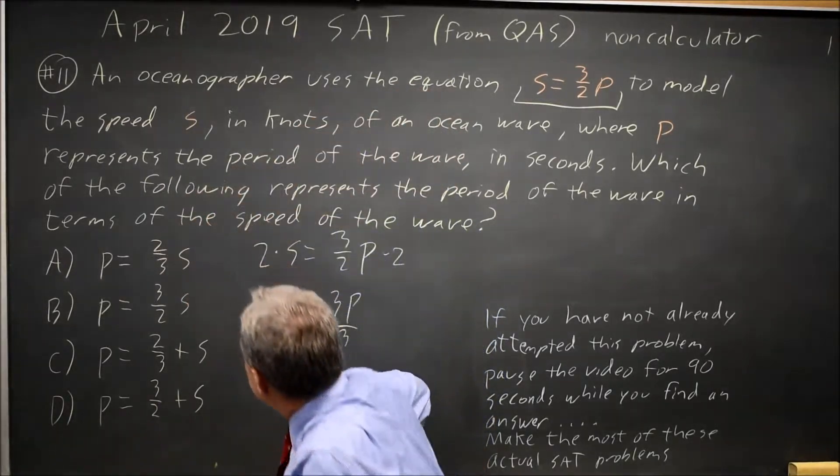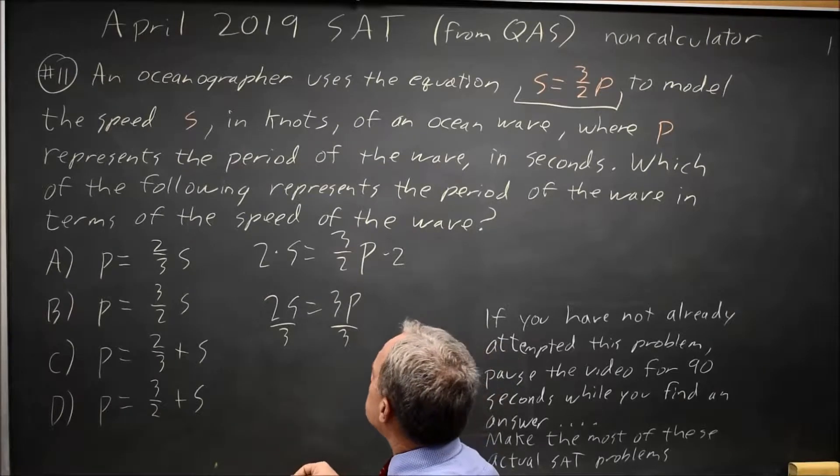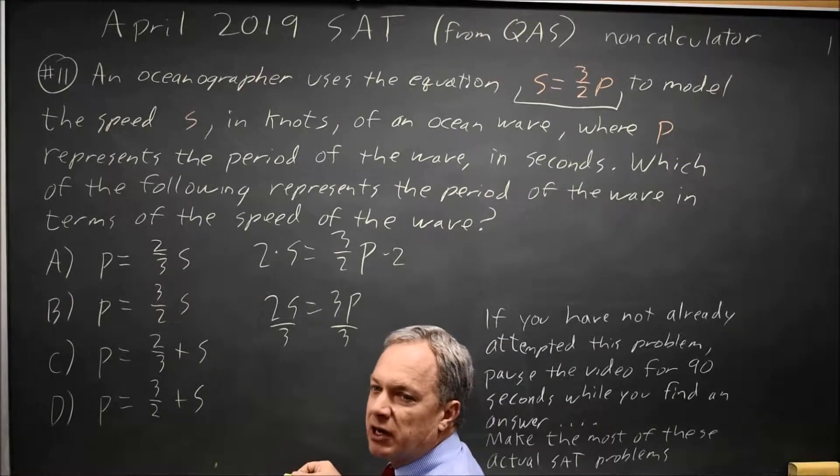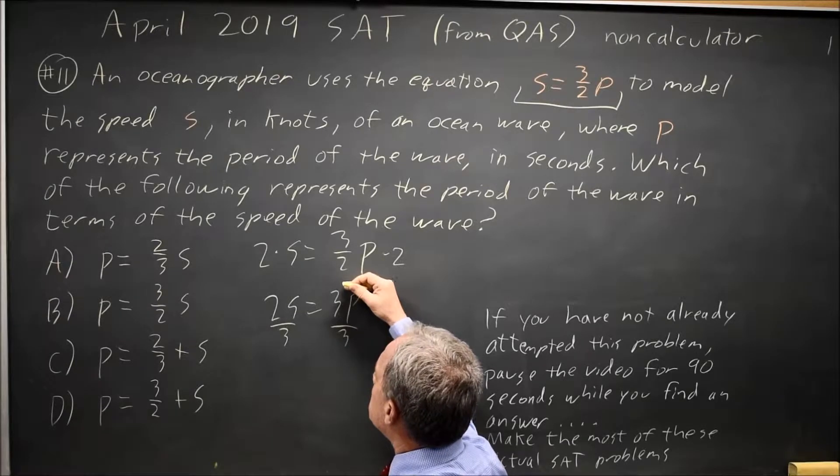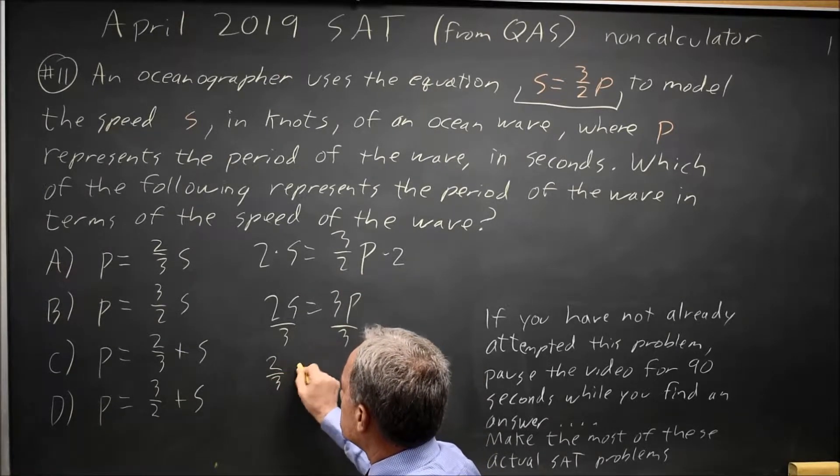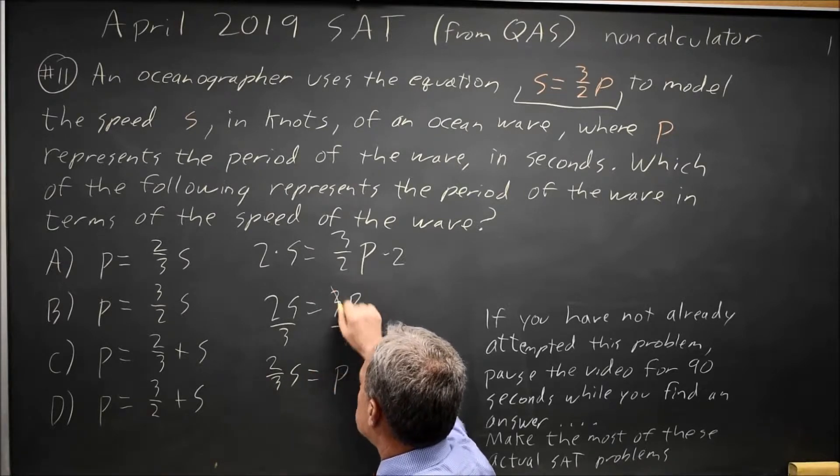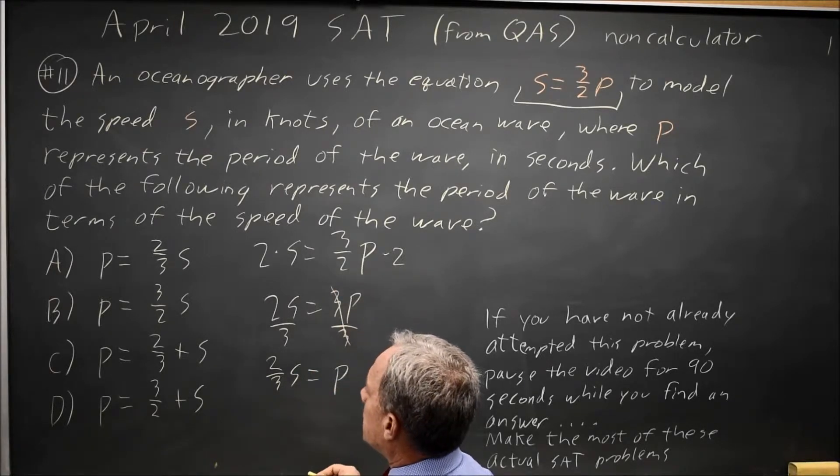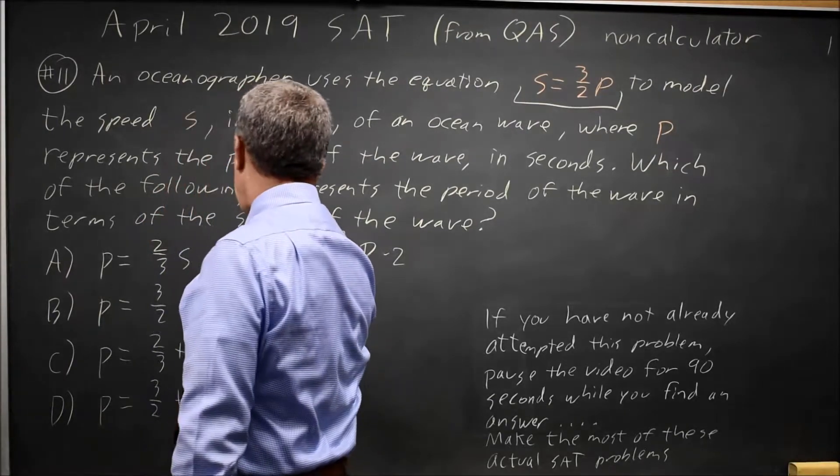Remember, you always do the same thing to both sides of an equation, and if you have a value multiplied by a constant, you need to divide by that constant. So that gives me 2S over 3, or 2 thirds S is equal to P, because 3 over 3 is 1, and that is choice A.